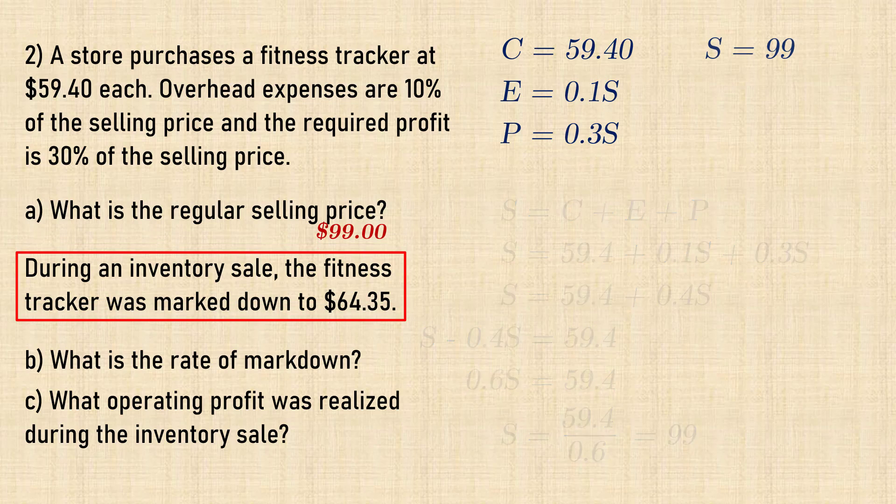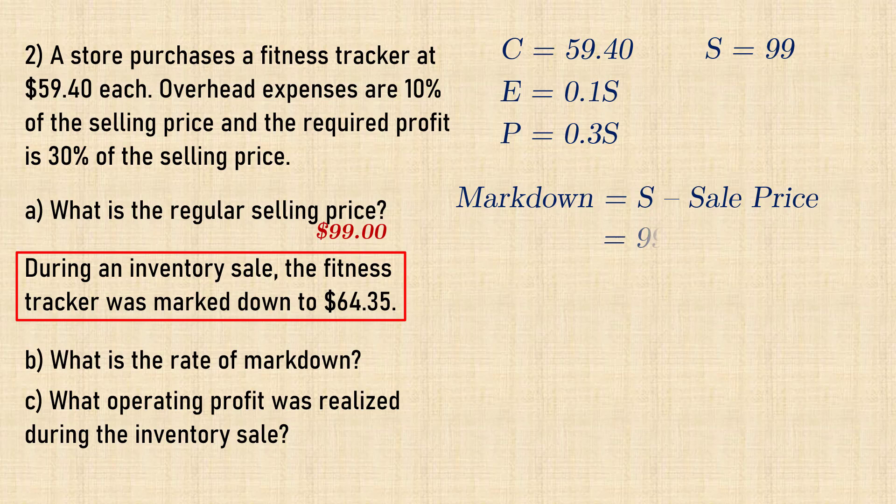Now during an inventory sale, the tracker was marked down to $64.35 from the regular selling price of $99. So the amount of markdown is 99 minus 64.35, which gives 34.65.